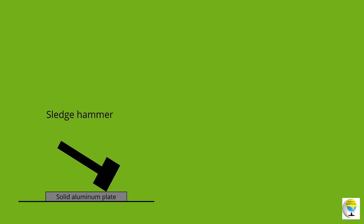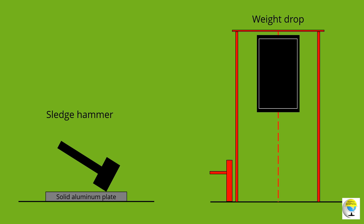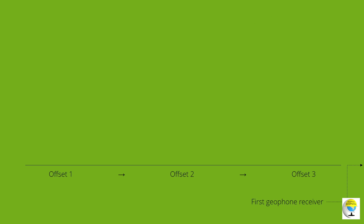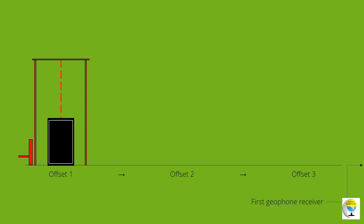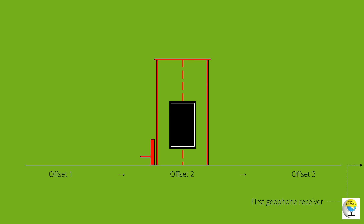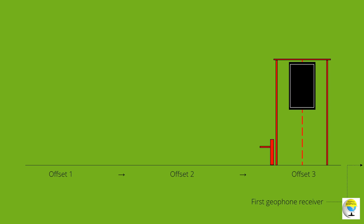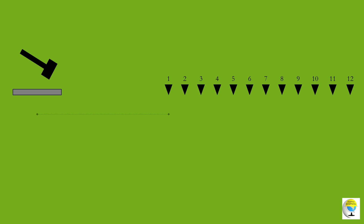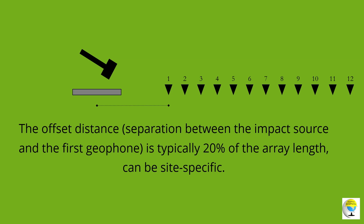To achieve greater depth, a more powerful impact source can be utilized, such as a weight drop source. The weight drop source can also maximize survey speed for large-scale surveys that require a large number of impacts. The source is separated from the first receiver by an offset distance, which is typically 20% of the array length, but can be site-specific.